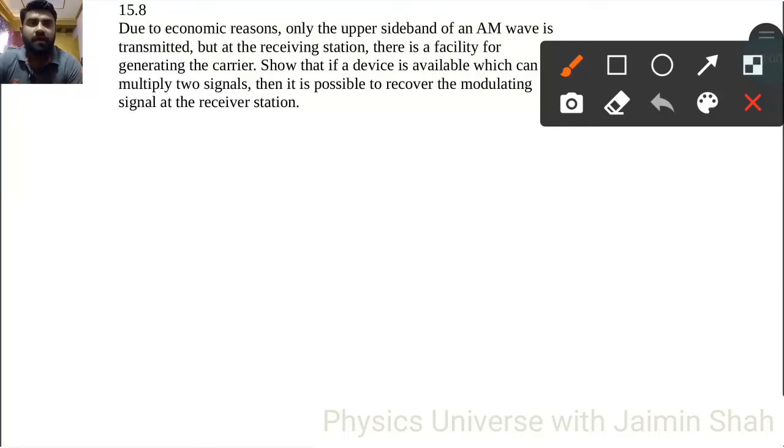Due to economic reasons, only the upper sideband of an AM wave is transmitted, but at the receiving station there is a facility for generating the carrier. So if a device is available which can multiply two signals, then it is possible to recover the modulating signal at the receiver station.